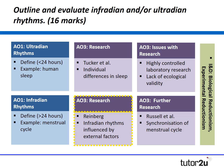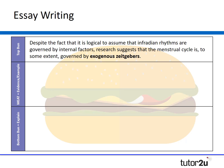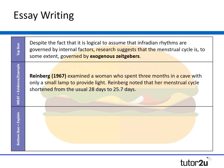Now let's look at how we might use Reinberg here as research. You might say — and notice here we're hinting towards the examiner report mentioned in videos one and two — despite the fact it's logical to assume that infradian rhythms are governed by internal factors, research actually suggests that the menstrual cycle is to some extent governed by exogenous zeitgebers. We're bringing in specialist terminology from other parts of the biopsychology course.